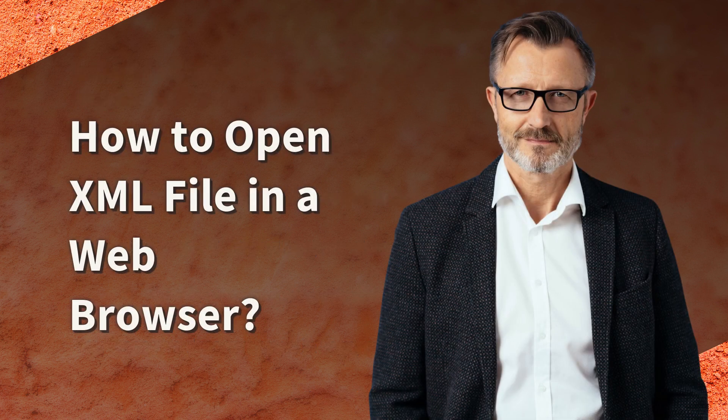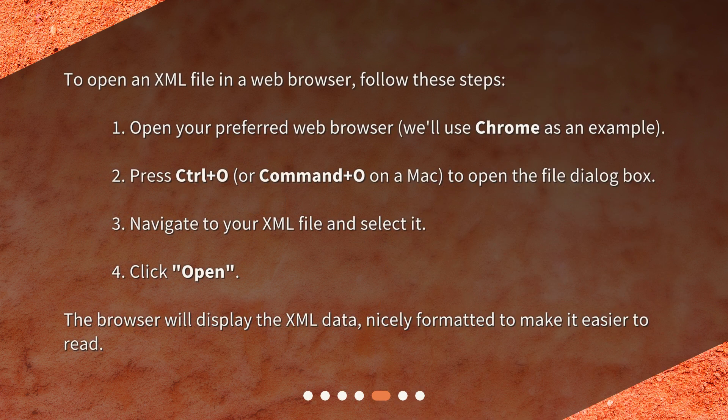How to open an XML file in a web browser? To open an XML file in a web browser, follow these steps. 1. Open your preferred web browser — we'll use Chrome as an example. 2. Press Control+O, or Command+O on a Mac, to open the file dialog box. 3. Navigate to your XML file and select it. 4. Click 'Open.' The browser will display the XML data, nicely formatted to make it easier to read.